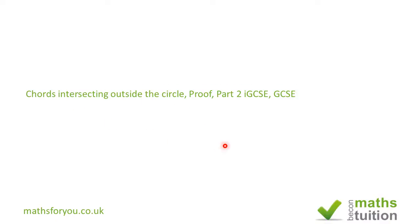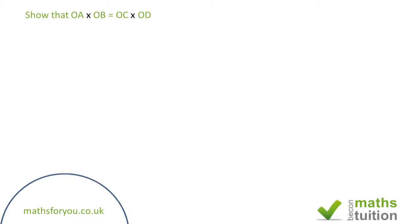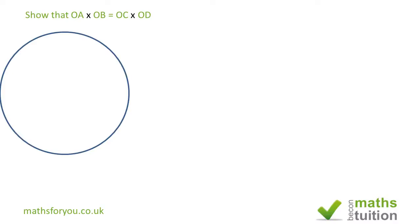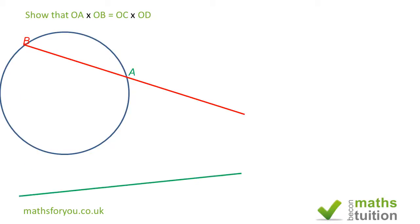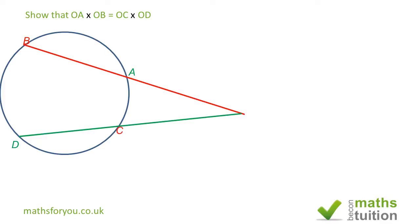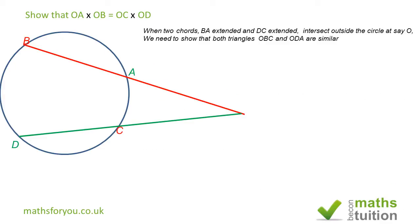Hello and welcome to this video on the chord intersection outside a circle. We're supposed to show that OA times OB is equal to OC times OD, and we need two chords to produce these lines. As we can see, if we extend the chords BA and DC, we find that both chords meet at the point O.